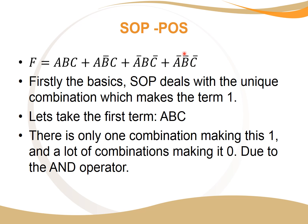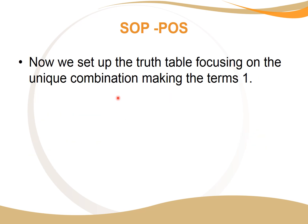There's only one unique combination making this term one. For example, when A is zero, B is zero, and C is zero, that makes the term A-not AND B-not AND C-not equal to one, because zero-not is one. So if A is one, it becomes zero due to the NOT, and the whole term is zero. There's only one unique combination making it one, due to the AND operator.